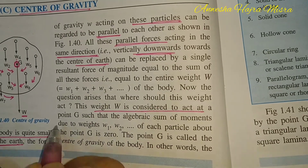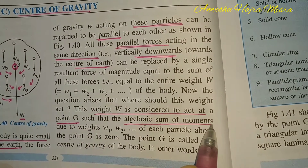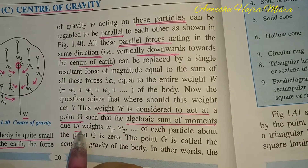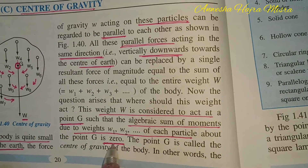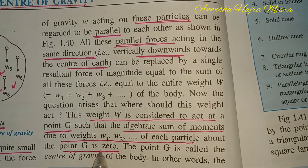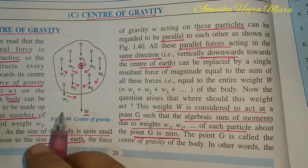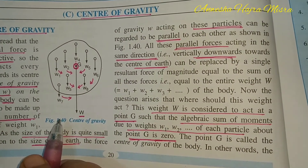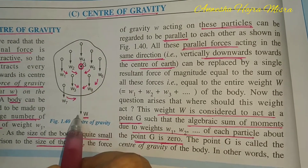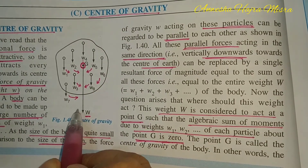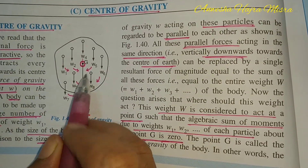The weights w1, w2, w3, w7, w9 are considered to act at point G, called the center of gravity, where the algebraic sum of moments due to all the weights of each particle about G is zero. About G, if you take the moments of all the particles, it will be zero. The resultant weight acts at the center of gravity, and all the moments about the center of gravity will be zero.